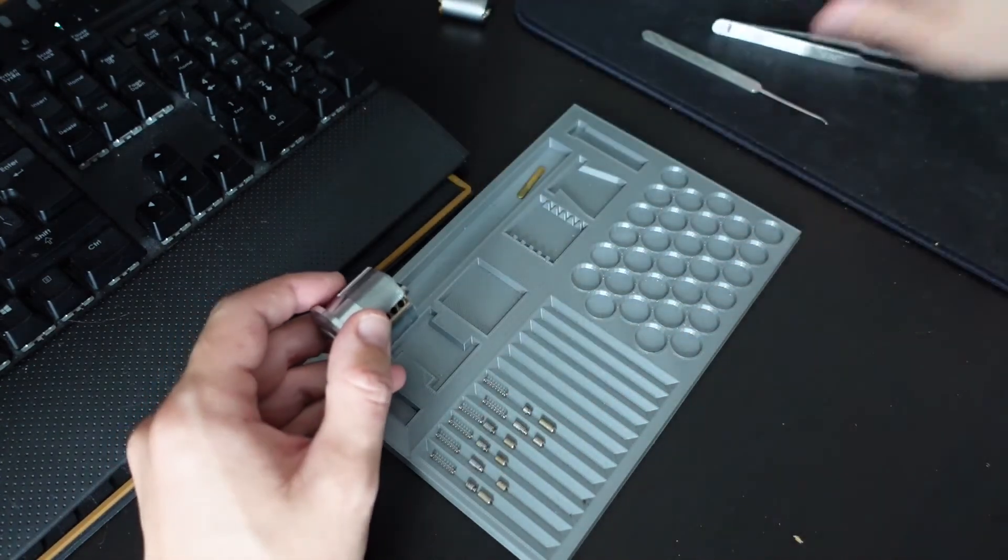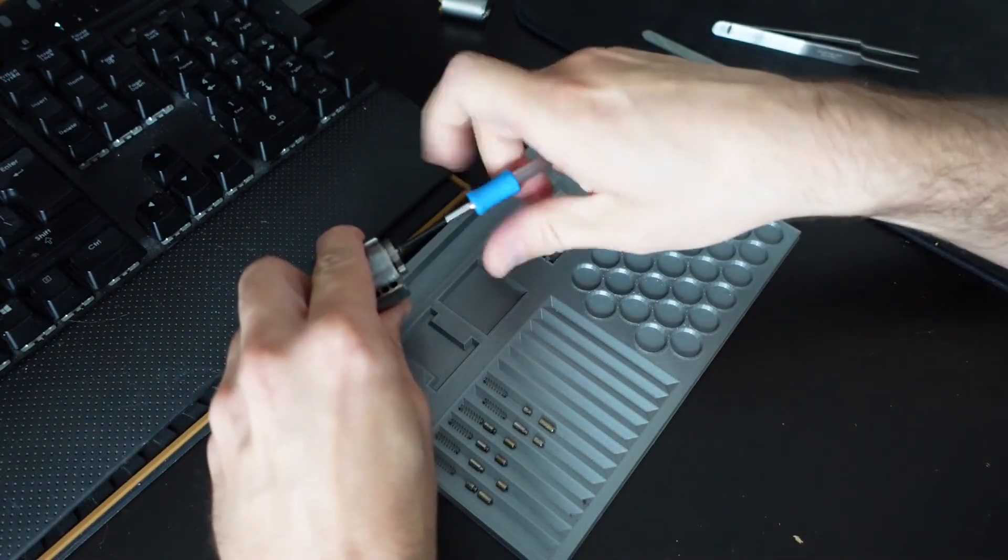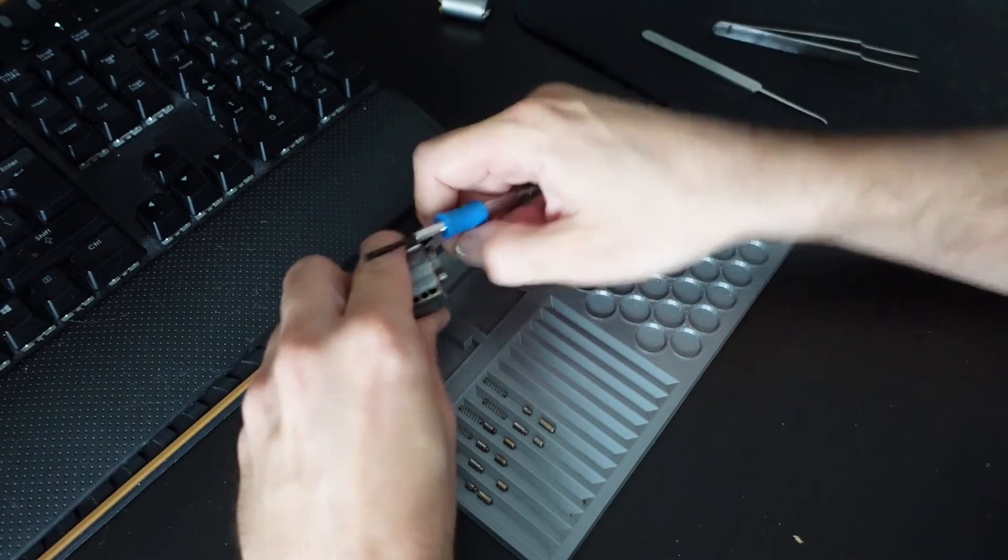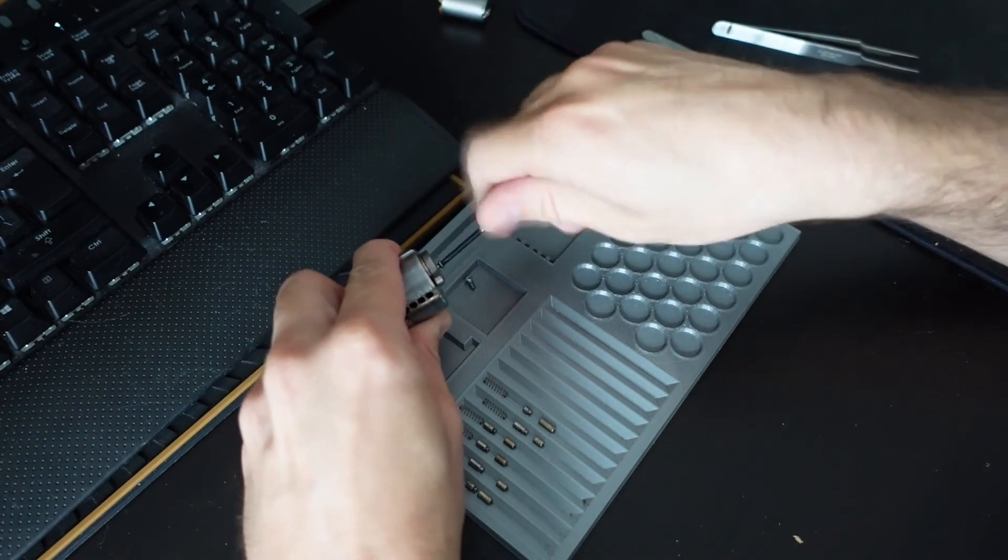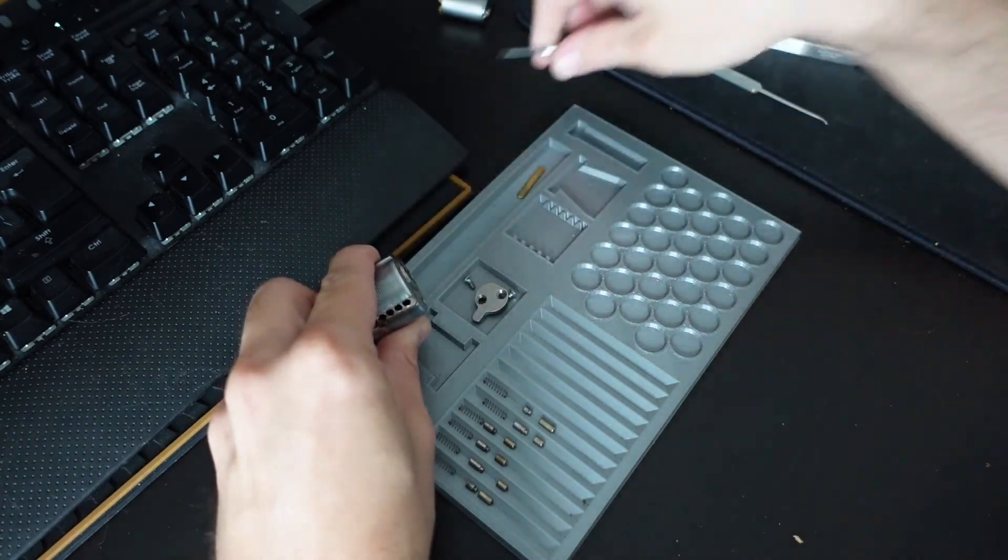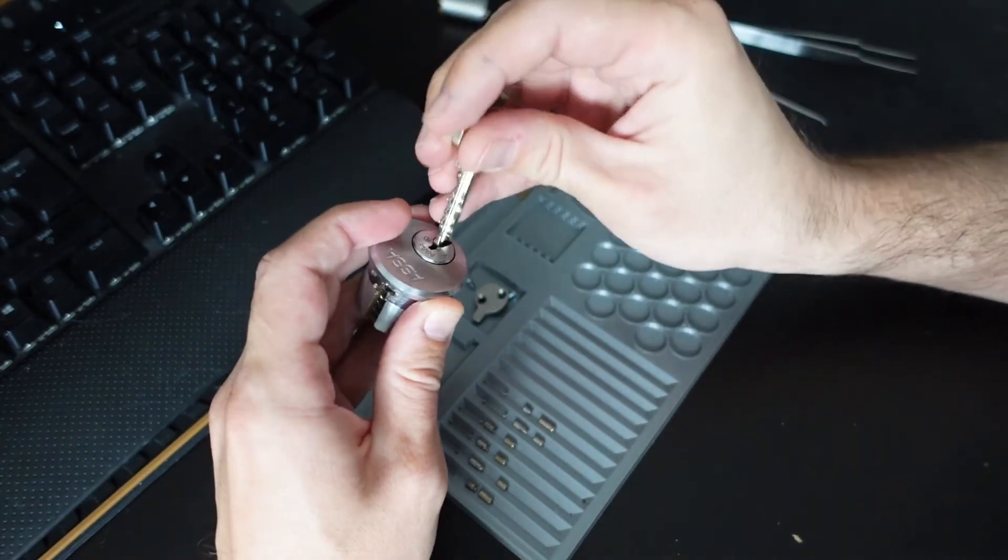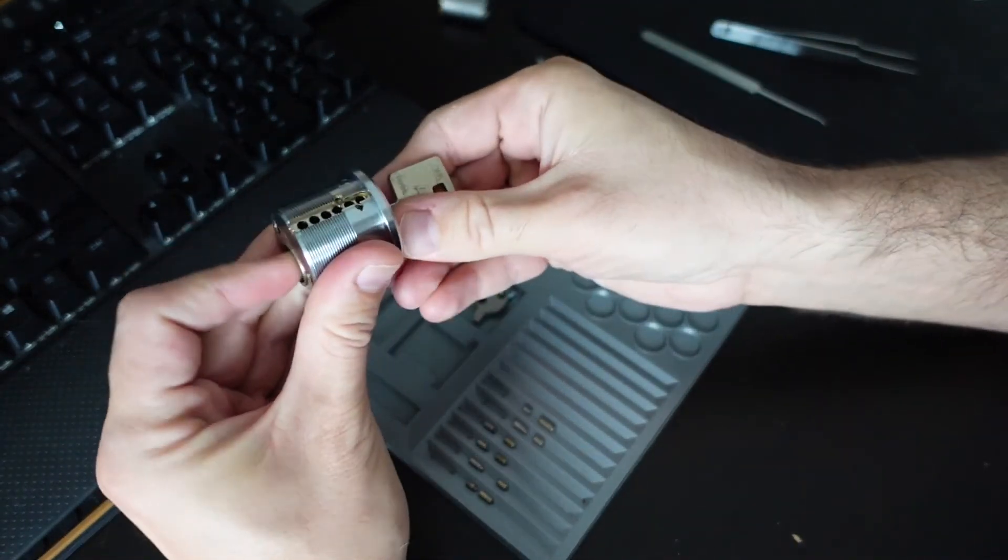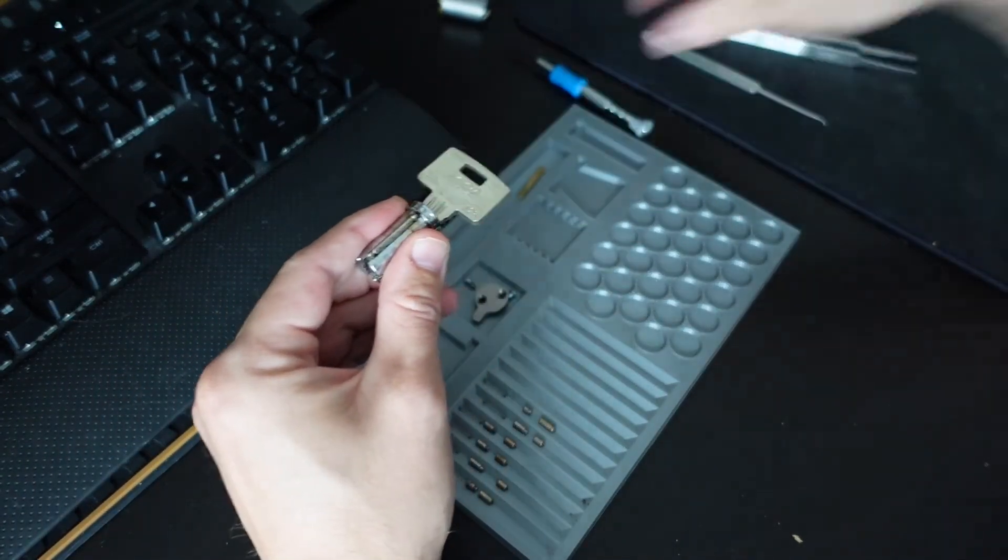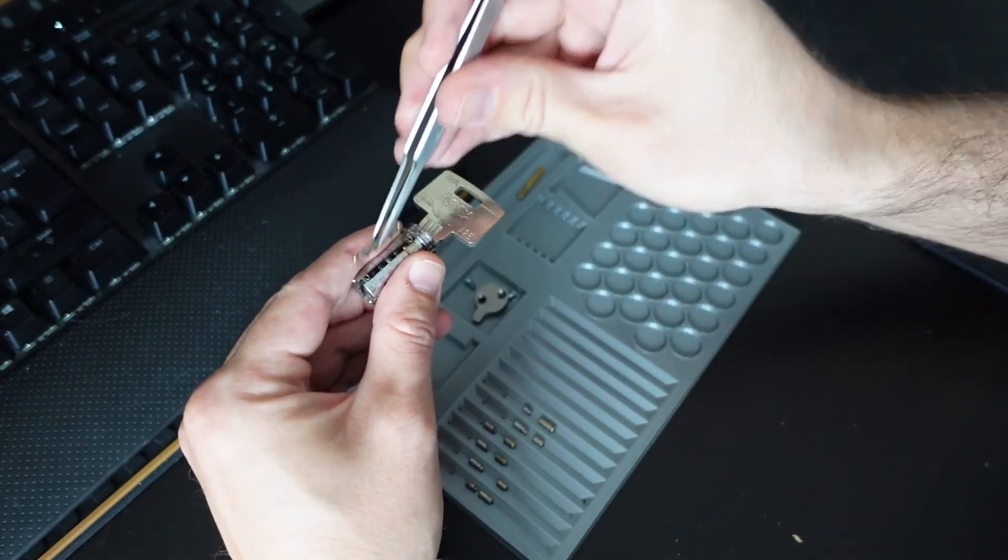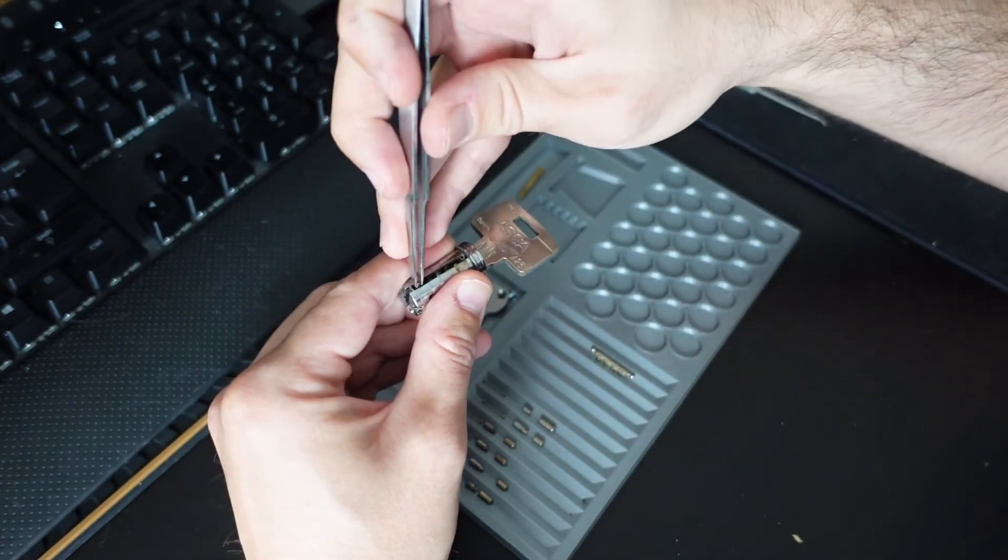Now we can unscrew this backplate. Insert the key and just push this out, catching the sidebar. Perfect. Let's remove the sidebar first, and the spring second.